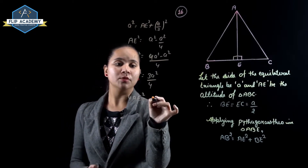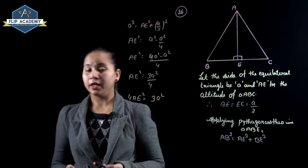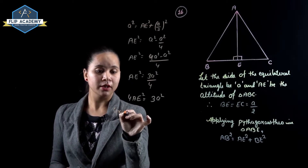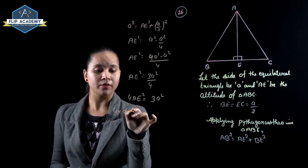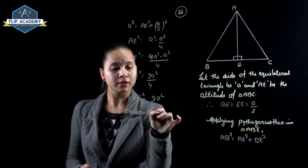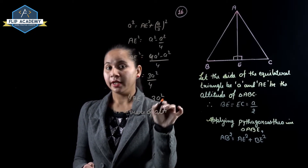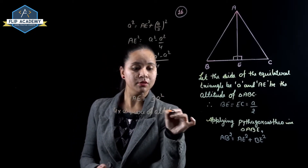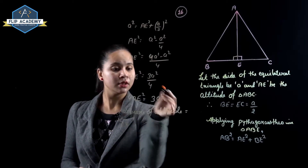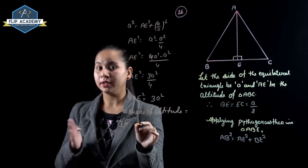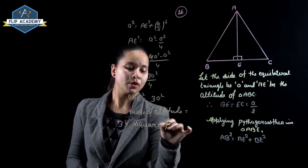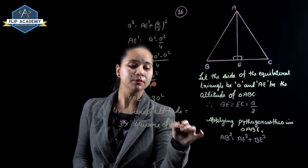Cross-multiplying gives 4AE² equal to 3A². Since AE is the altitude, 4 times the square of the altitude equals 3 times the square of the side. Hence proved.